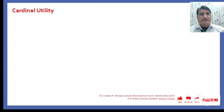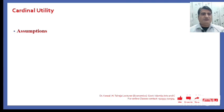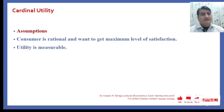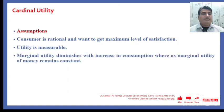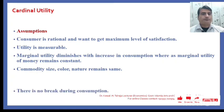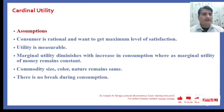What is cardinal utility and how does it function? It is based on some assumptions. Cardinal utility assumes that the consumer is rational and wants to get the maximum level of satisfaction. Utility is measurable. Marginal utility diminishes with an increase in consumption, whereas the marginal utility of money remains constant. Commodity size, color, and nature remain the same, and there is no break during consumption.